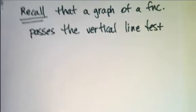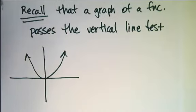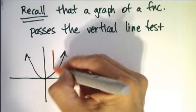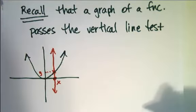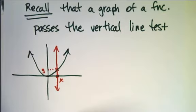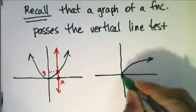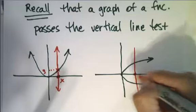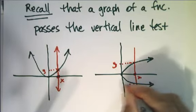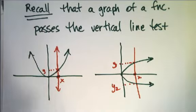Now recall that the graph of a function will pass the vertical line test. That is, if I take any vertical line and draw it through my graph, it will only hit the graph in exactly one place — so for each x-value, there is exactly one y-value. That's how I can tell graphically whether I have a function. For example, a graph that does not represent a function will have a vertical line intersecting it at two different y-values.